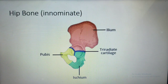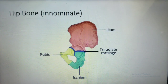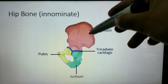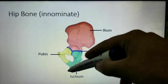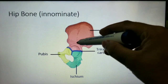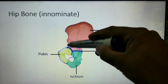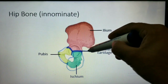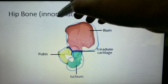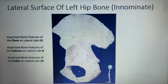The hip bone is made up of three different bones: ilium, pubis, and ischium. The hip bone is also called the innominate bone. The ilium is the red part, the ischium is the green part, and the pubis is the yellow or light green part. So the hip bone is also called innominate, and we will now study the bone features of the lateral surface of the left hip bone.